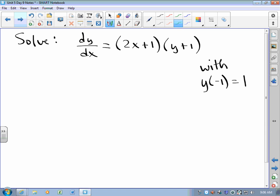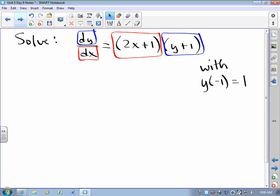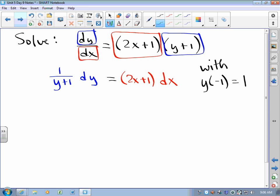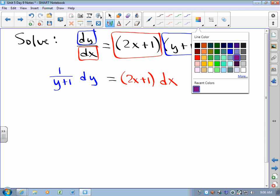Separable because you've got your y stuff and your x stuff, and they are written in such a way that we can separate the y stuff to one side and the x stuff to the other side. We can divide both sides by y+1, multiply both sides by the differential dx, and those things are equivalent. So how do we solve this thing?